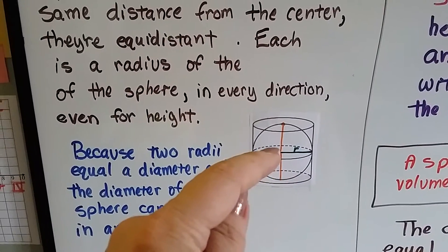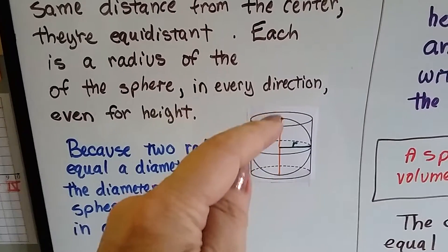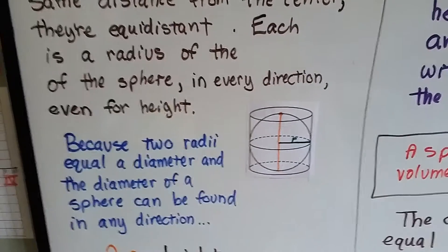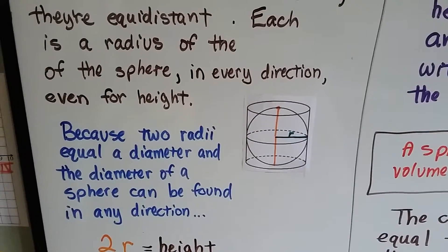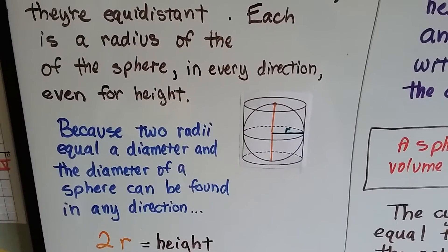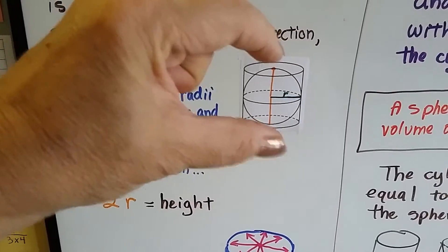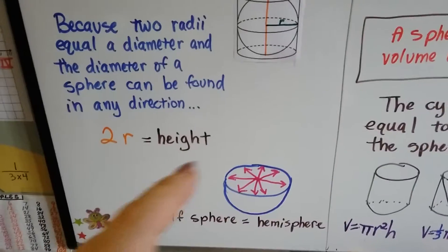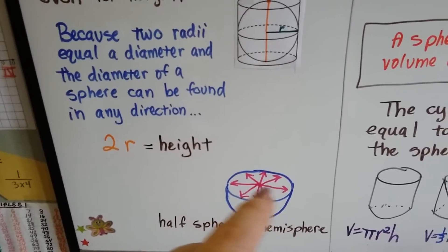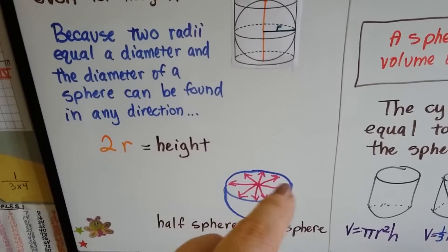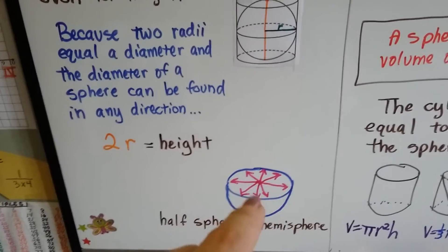We could do a radius from the center down and then continue it up, and that would be the diameter. Because two radii equal a diameter, and the diameter of a sphere can be found in any direction. Two radii are equal to the height. It doesn't matter what direction we come out from the center. Every single point is going to be a radius.